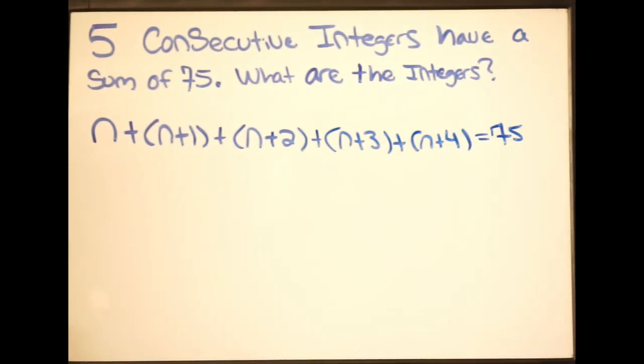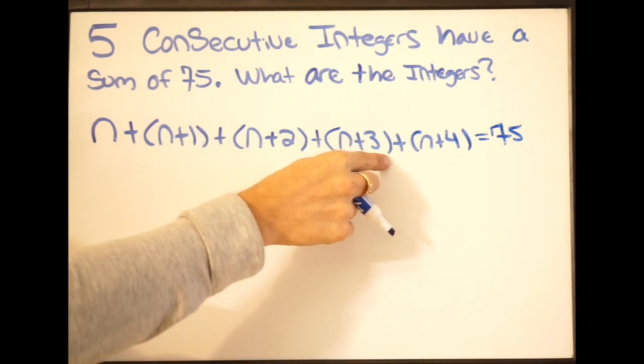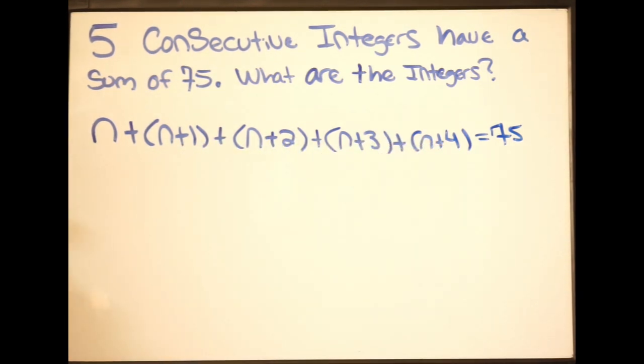So again, here are my five consecutive integers: 1, 2, 3, 4, and 5. And your sum is going to be 75, equal to 75. So what we're going to do here is solve for n. Once we have n, we can plug it in, and we can get our five consecutive integers.